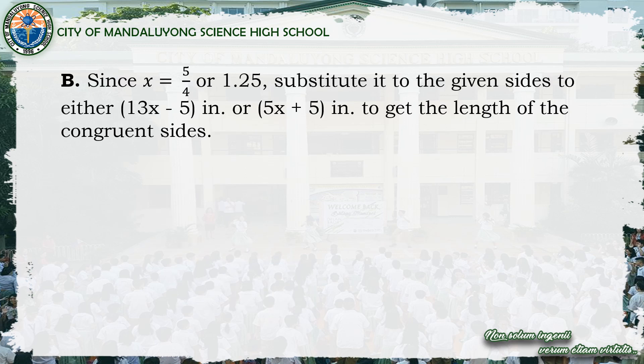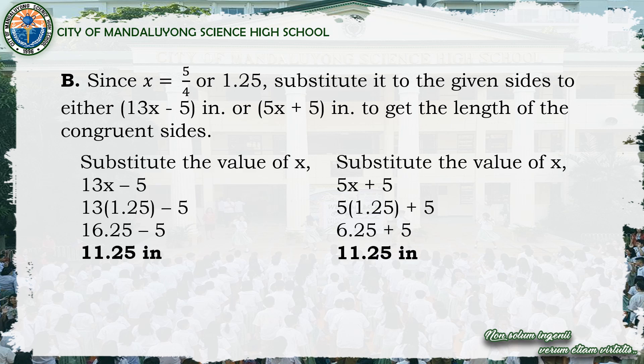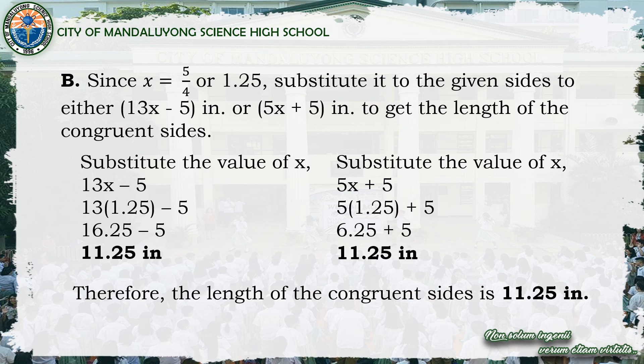For letter B, since x equals 5 over 4 (or 1.25 in decimal), substitute into either expression. Using 13x minus 5: 13 times 1.25 minus 5 equals 11.25 inches. Using 5x plus 5: 5 times 1.25 plus 5 also equals 11.25 inches. Therefore, the length of the congruent sides is 11.25 inches.